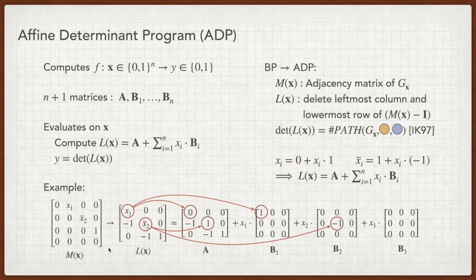For example, the not x2 entry in L of x can be decomposed to 1 entry in matrix A and minus 1 entry in matrix B2. We can also observe that if L of x has nothing to do with some input xi, the bi matrix will be a zero matrix. This observation is useful in our attack.